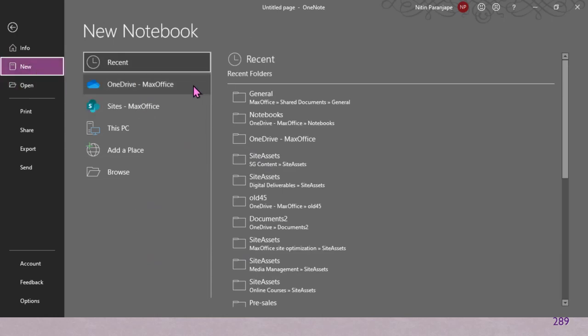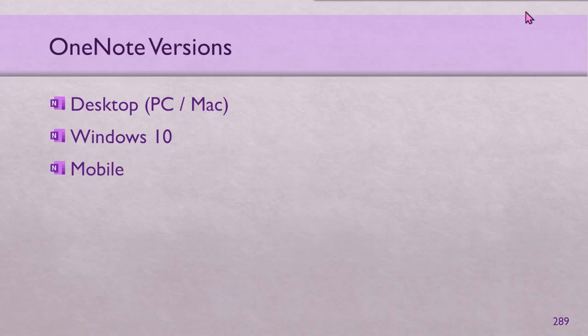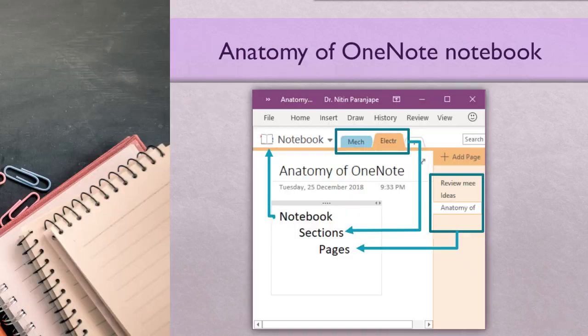Why is storing on OneDrive important? As soon as you create the notebook on OneDrive, it will be available on all your devices where you have logged in using the same OneDrive account. If you create a OneNote notebook on local disk, it obviously will not sync with anything else, and if the local drive fails you have no backup. So having created a OneNote notebook on OneDrive, what do we have inside?